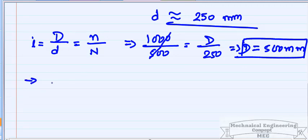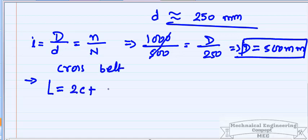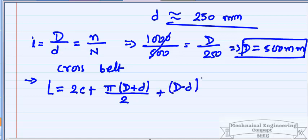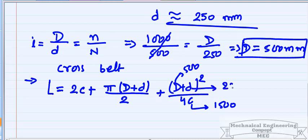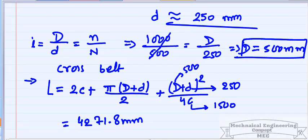Next, calculate the length of the belt. For a cross belt arrangement, the formula is L = 2C + π(D + d)/2 + (D + d)²/4C. Substituting C = 1500, D = 500, and d = 250, the length comes out as approximately 4271.84 mm.